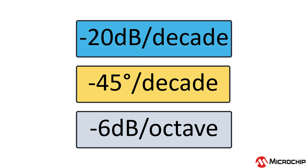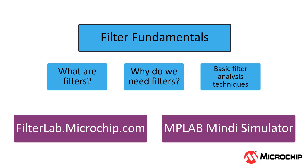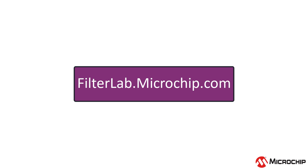So there you have it — we have our minus 20 dB per decade, our minus 45 degrees per decade, and our minus 6 dB per octave explained. To learn more about analog filters, check out the other videos in our analog filter video series. You can also make your own filter using FilterLab, our active analog filter designer, at filterlab.microchip.com. I hope this video helped. Thanks for watching!